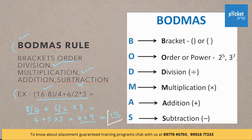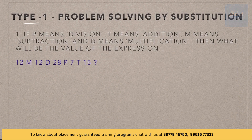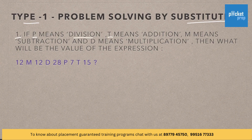This is the order of solving questions. Now let us get into the types of questions asked in this topic. Type 1: Problem solving by substitution. Here is a question. If P means division, T means addition, M means subtraction, D means multiplication, then what will be the value of the expression?